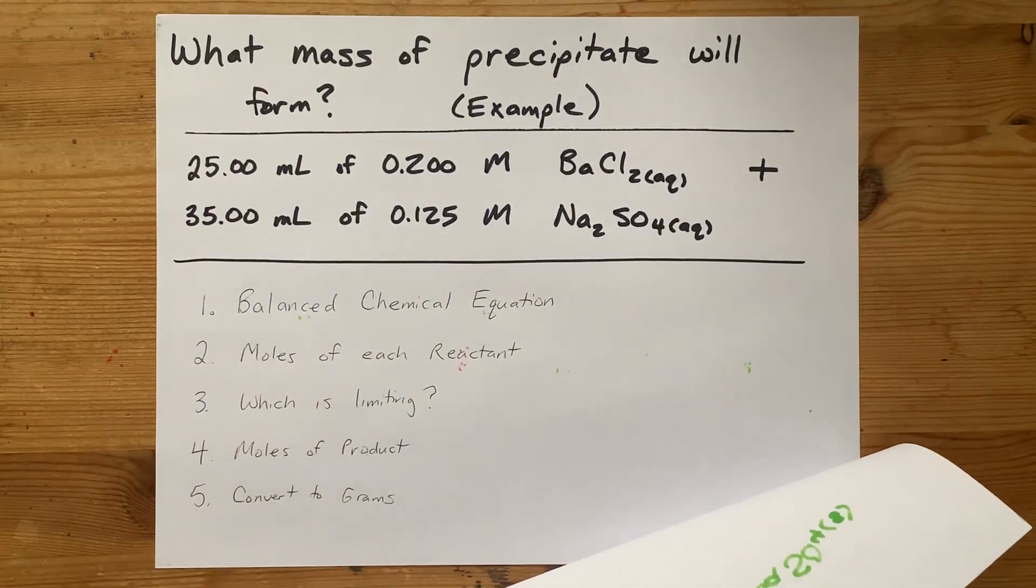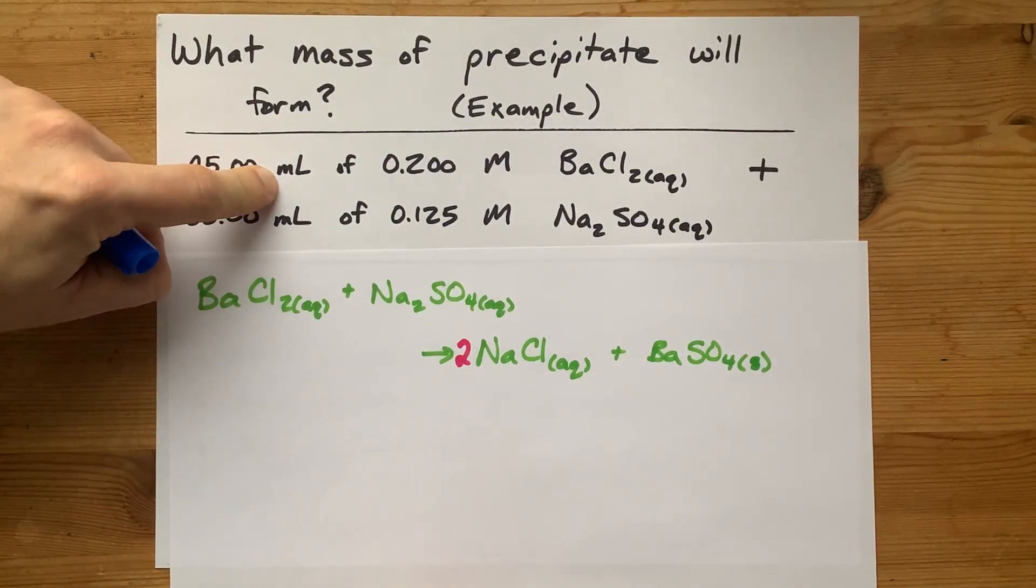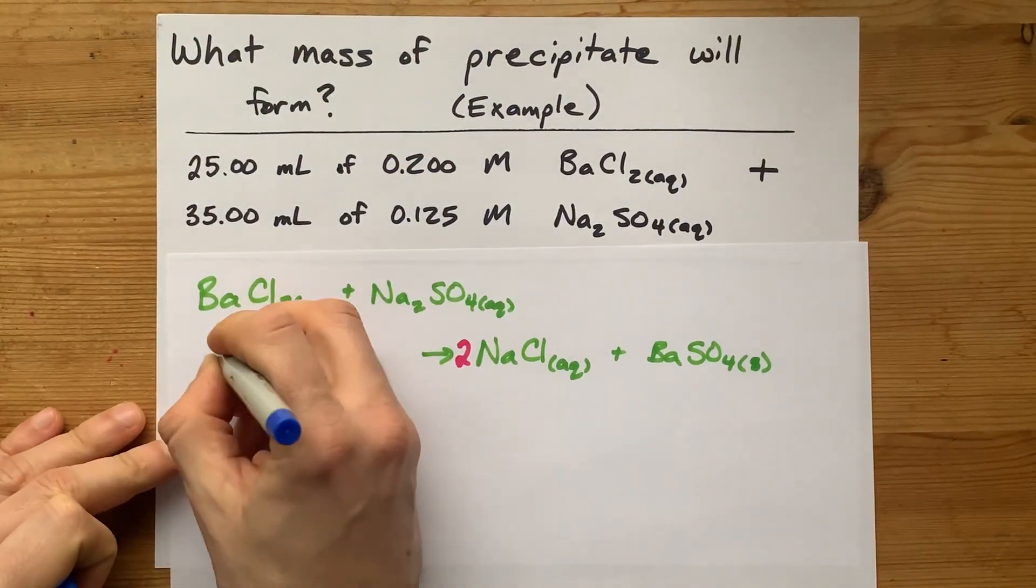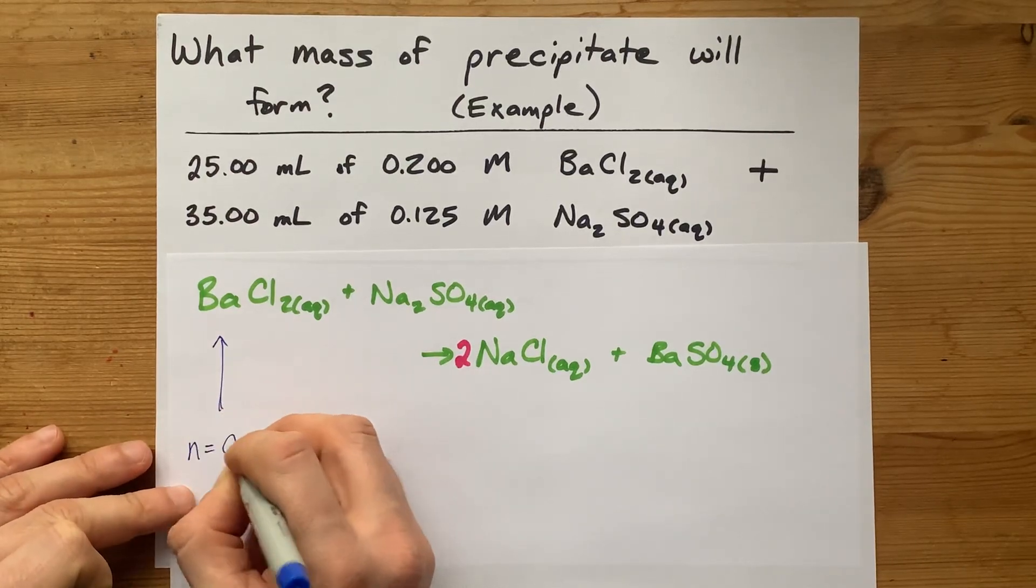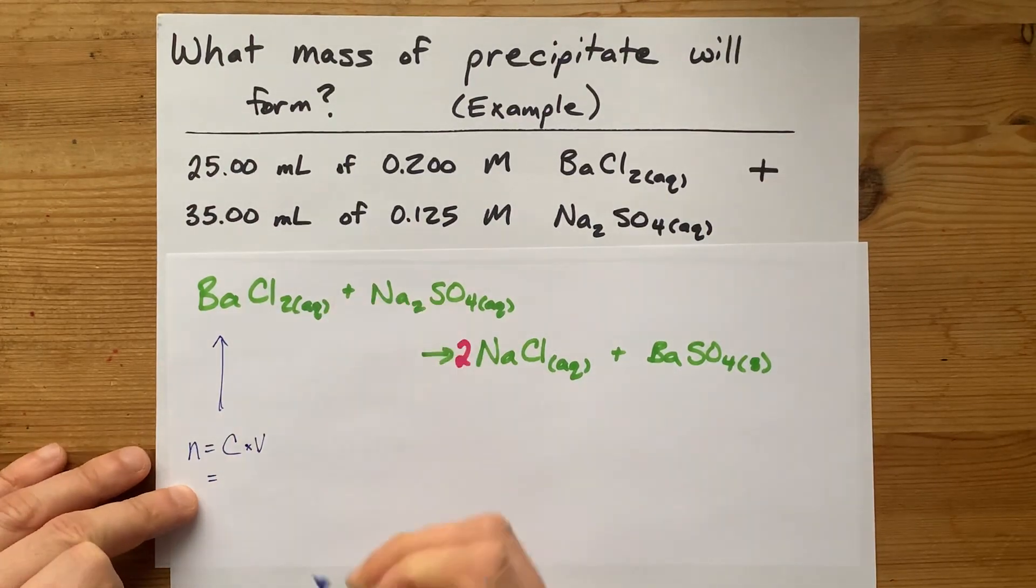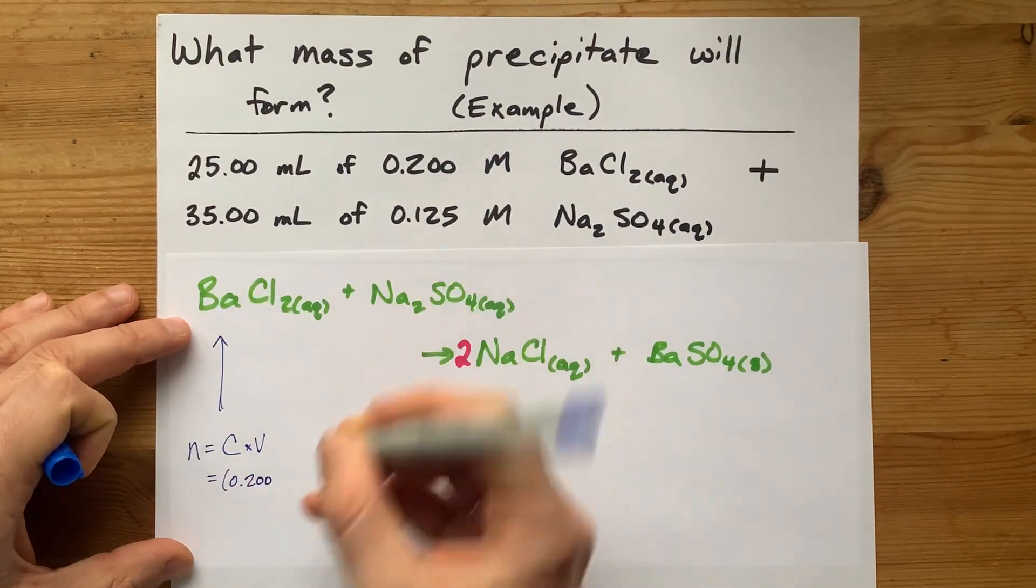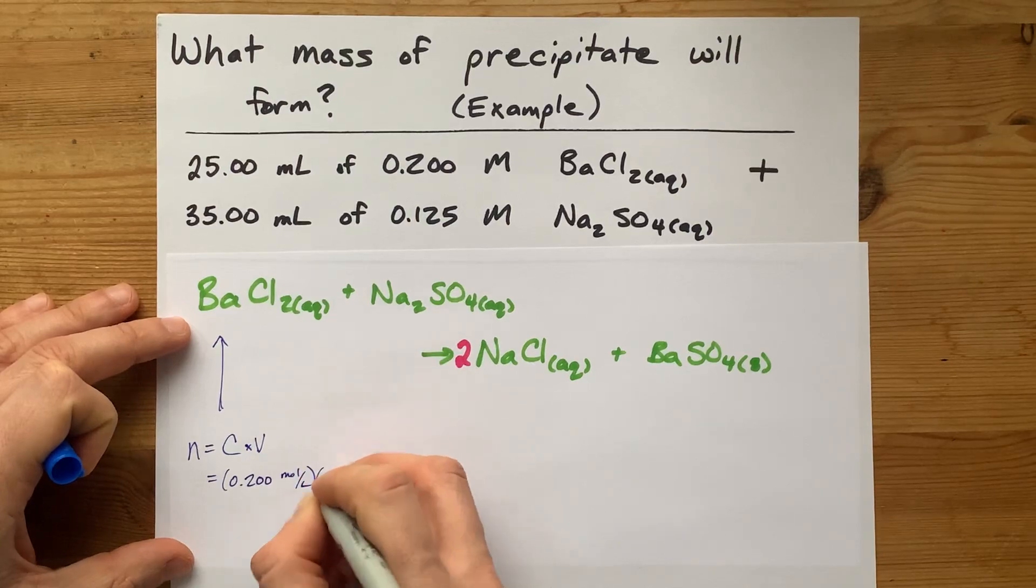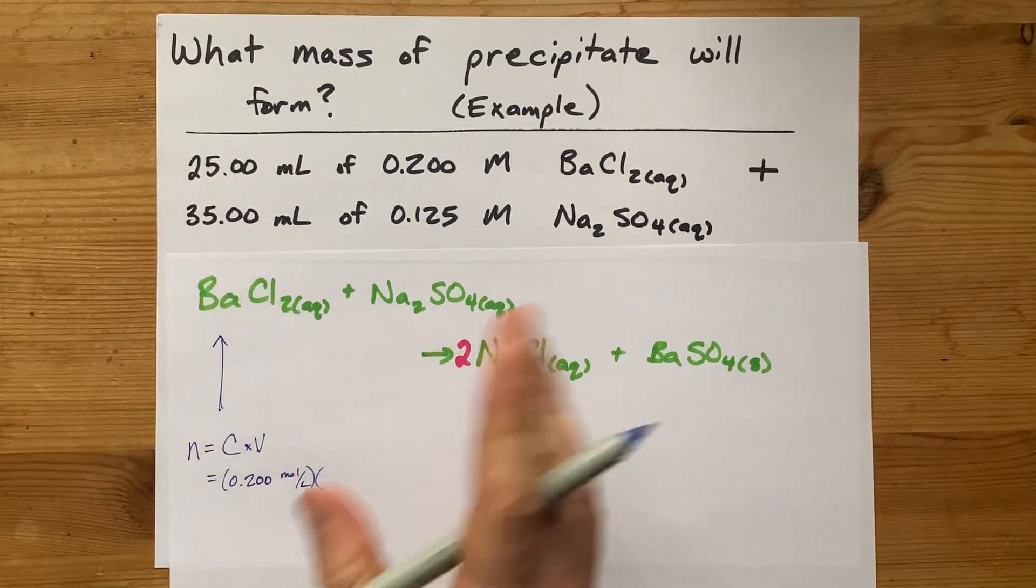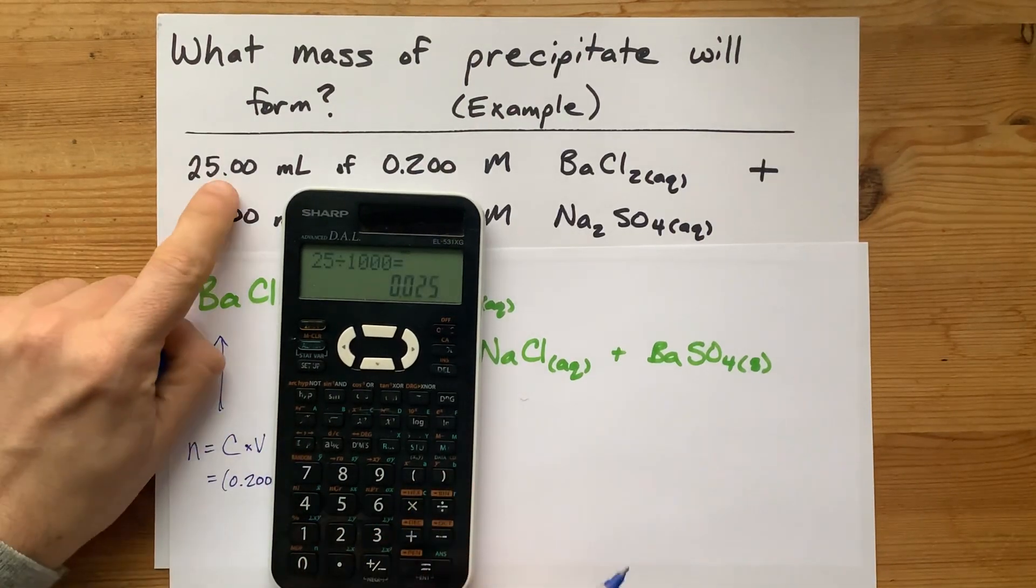We're going to need to figure out how many moles of each reactant we actually have. Now, because you're given milliliters, or volume, along with molarity, or moles per liter, the way that we're going to do that calculation is n equals C times V, concentration times volume. I'm going to do it for barium chloride first. The concentration is 0.200 moles per liter. And I'm going to multiply it by liters. And this is important because I have per liter here. That needs to be converted into liters. The way that you do that is to divide it by a thousand.